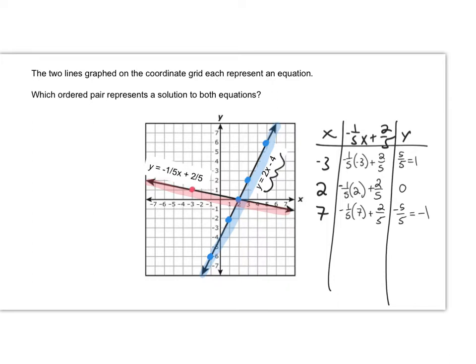Let's see. Negative 3, 1, 2, 0, I already got a dot there, 7, negative 1. There we go. And so you'll notice that these are also on the line. That's because these points are solutions to the equation y equals negative 1 fifths x plus 2 fifths.